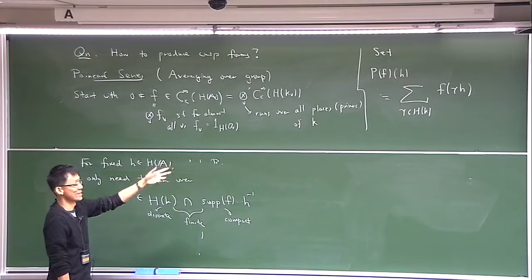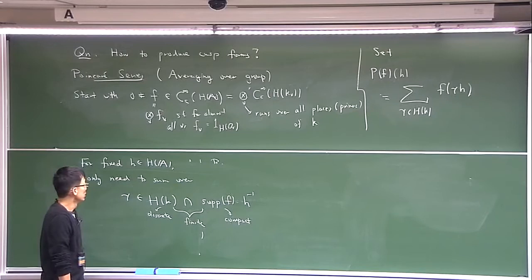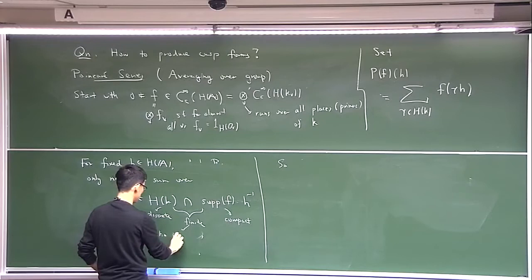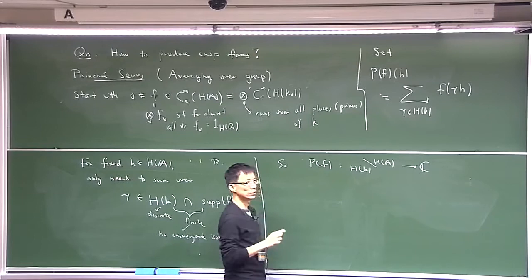And if you just move h a little bit, you can sum over the same finite set. So you have smoothness if you wish. We have a well-defined function. The upshot is there are no convergence issues. And so PF — P for Poincaré — is a well-defined function.